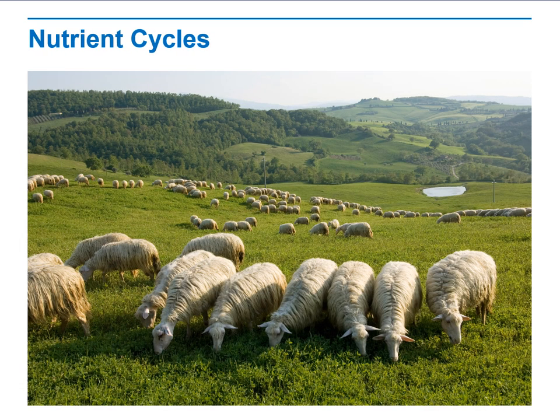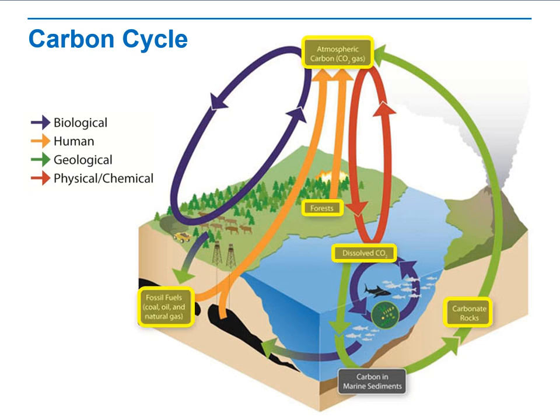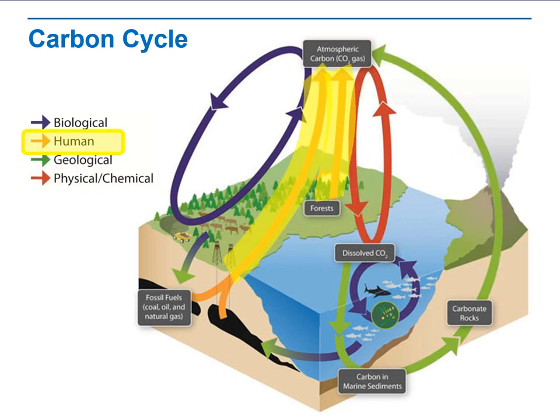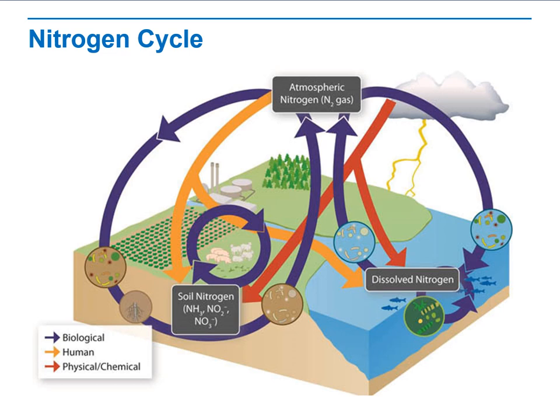Then we will talk in depth about the nutrient cycles, going through the carbon cycle — its biological, geological, physical, chemical processes, and human impact. Then we move to the nitrogen cycle. We care about the nitrogen cycle because the main macromolecules — proteins and nucleic acids — contain nitrogen, and the nitrogen bases present in DNA (deoxyribonucleic acid) are important. That is why we will go through the nitrogen cycle.